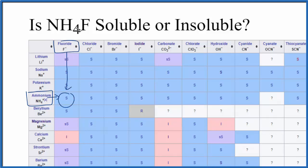So when we put NH4F in water, it'll break apart into the ammonium ion, that's the NH4+, and then the F-, the fluoride ion.